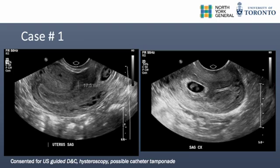When using transvaginal ultrasound to evaluate for cervical ectopic pregnancy, the presence of a fetal heart rate and negative sliding sign between the gestational sac and the cervical canal is strongly suggestive of this diagnosis.